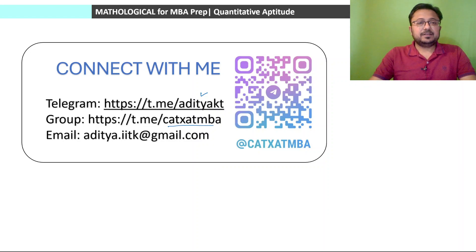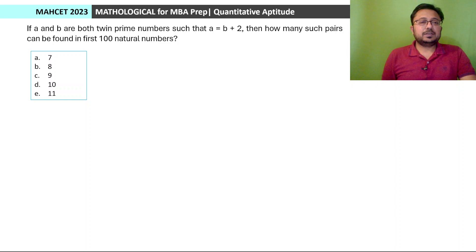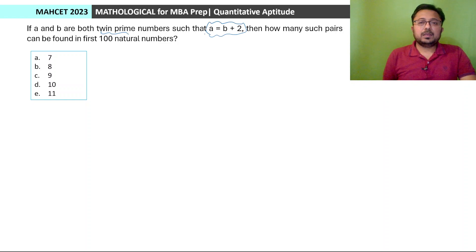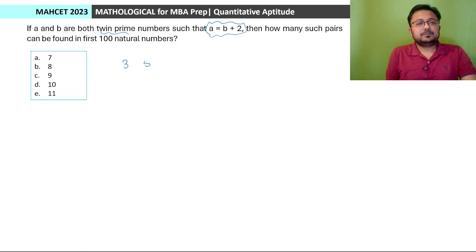Question number one of the session: If A and B are both twin prime numbers such that A is equal to B plus 2, then how many such pairs can be found in the first hundred natural numbers? We have twin primes — the definition of twin primes is that the difference between them should be equal to 2. The first example: 3 and 5 are twin primes. Similarly, 5 and 7.